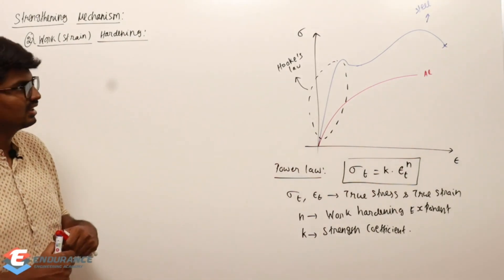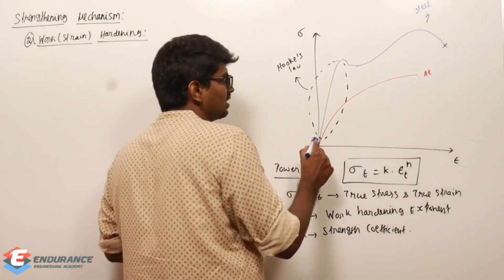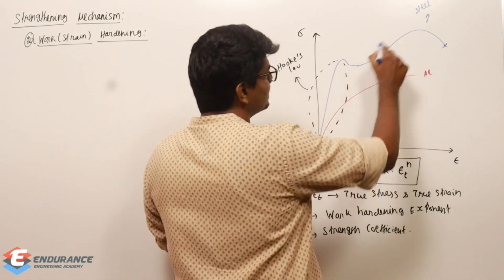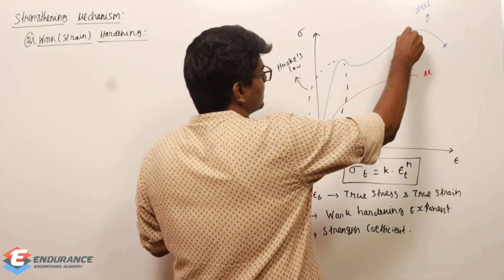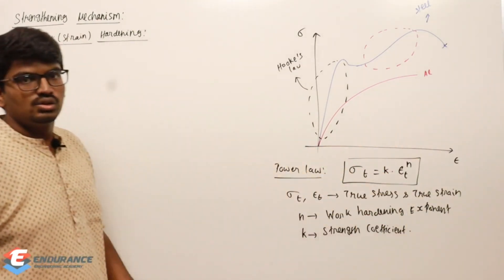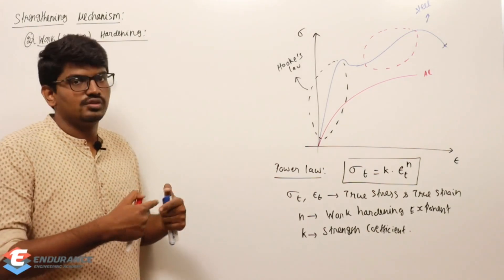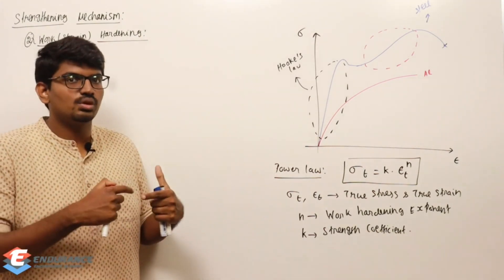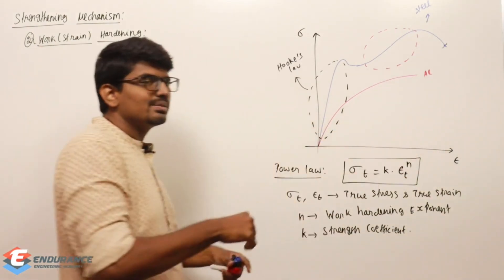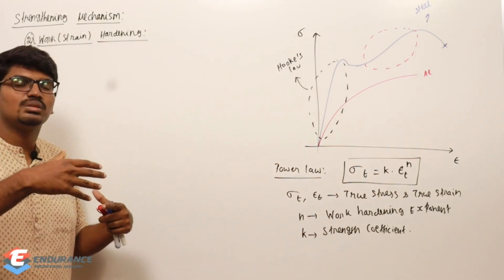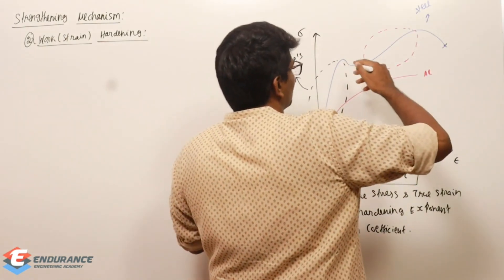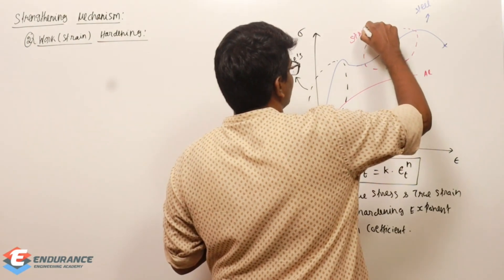If you observe the steel specimen's stress-strain curve, after the upper and lower yield points there is a region where stress increases suddenly. If I want to increase the strain further in this region, I need to apply more load to deform that material. This means the strength of the material has increased.